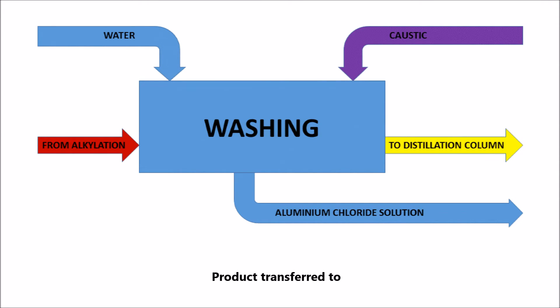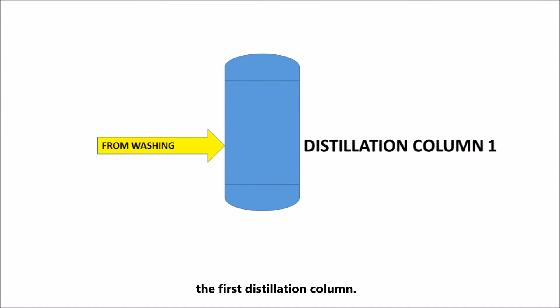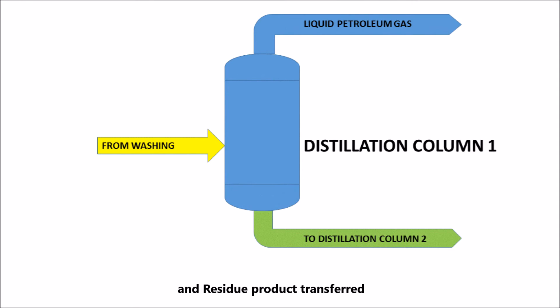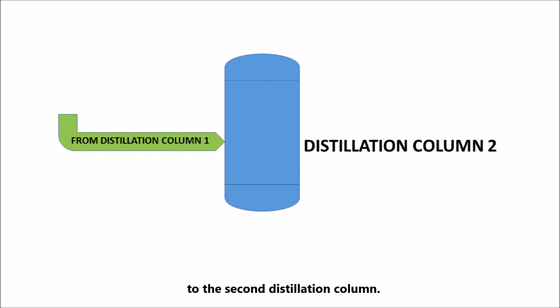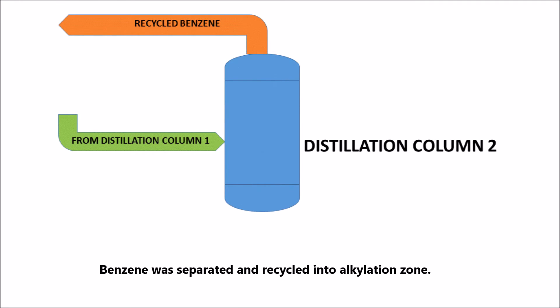Product was transferred to the first distillation column, where liquid petroleum gas was separated and the residue product transferred to the second distillation column. Benzene was separated and recycled into the alkylation zone.